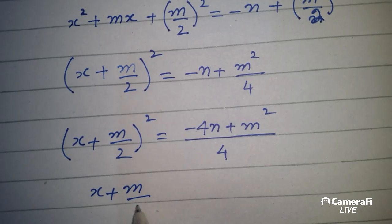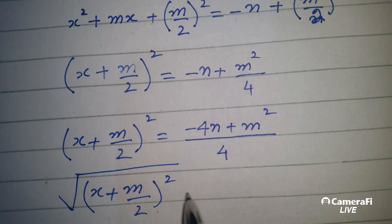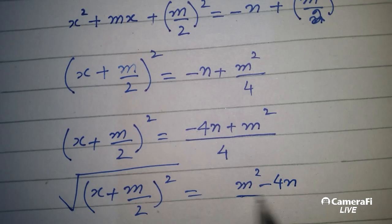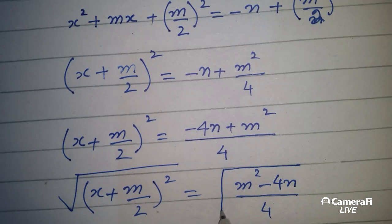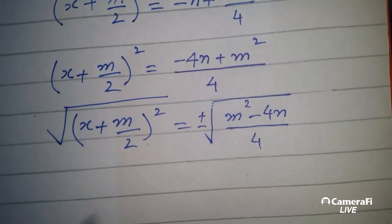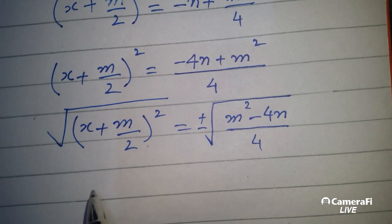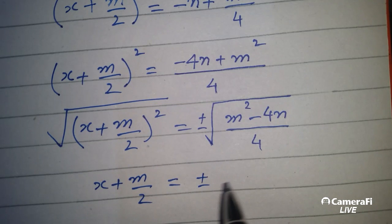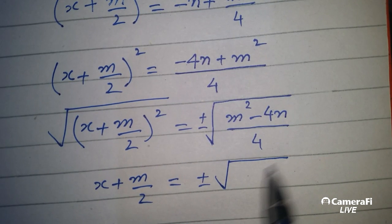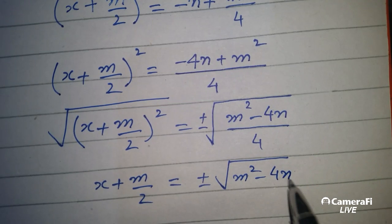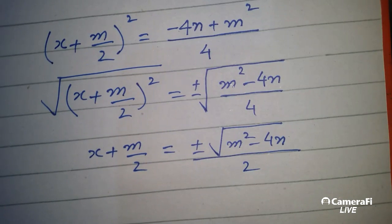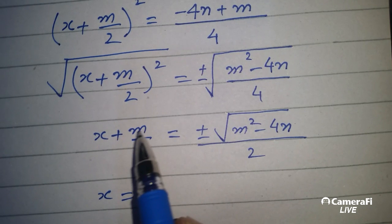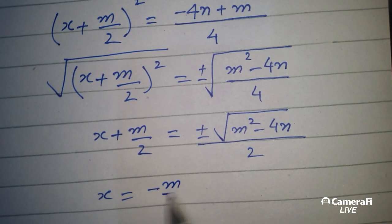دونوں طرف square root لے لیتے ہیں۔ اس کو arrange کر کے پہلے m square لکھتے ہیں، minus 4 اور اس کا بھی جزر لے لیا، ادھر plus minus لگانے ہیں۔ جزر اور مربع cancels ہو جاتے ہیں۔ اس کے بعد m کو بھی ادھر لے جاتے ہیں، minus plus m by 2 ہے تو ادھر جا کے minus m by 2۔